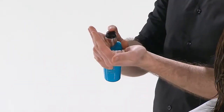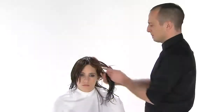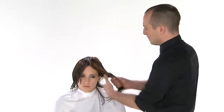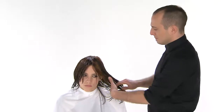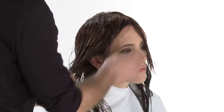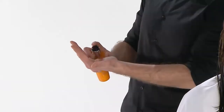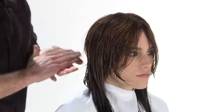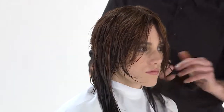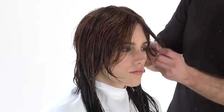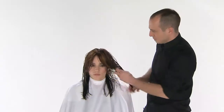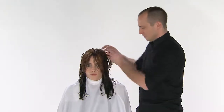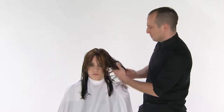Use No Inhibition Silkening Milk to give softness and shine to the hair. Distribute over hair and ends. Apply No Inhibition Curl Definer to the hair to increase flexibility, definition and resistance to the hairstyle.